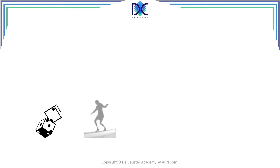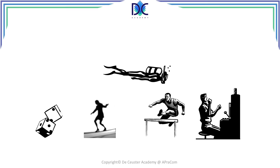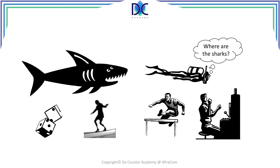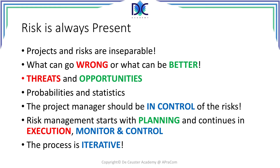Risk is, in many parts of our life, a normal thing. When you play dice, when you gamble, when you go scuba diving — all things we have are related to some risk events. If you don't play the lotto, you cannot win. If you play, you can lose, but you can win. A very important element in project risk management is that we talk about threats and opportunities. Threats are negative risk events and opportunities are positive risk events. Risk is always present. Projects and risks are inseparable. We have to look at what can go wrong or what can be better — it's about threats and opportunities.